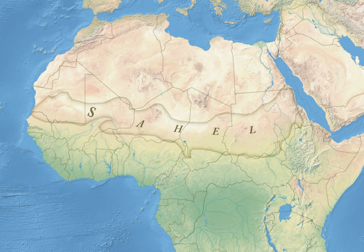The Sahel is the ecoclimatic and biogeographic zone of transition in Africa between the Sahara to the north and the Sudanian savannah to the south. Having a semi-arid climate, it stretches across the south-central latitudes of northern Africa between the Atlantic Ocean and the Red Sea.